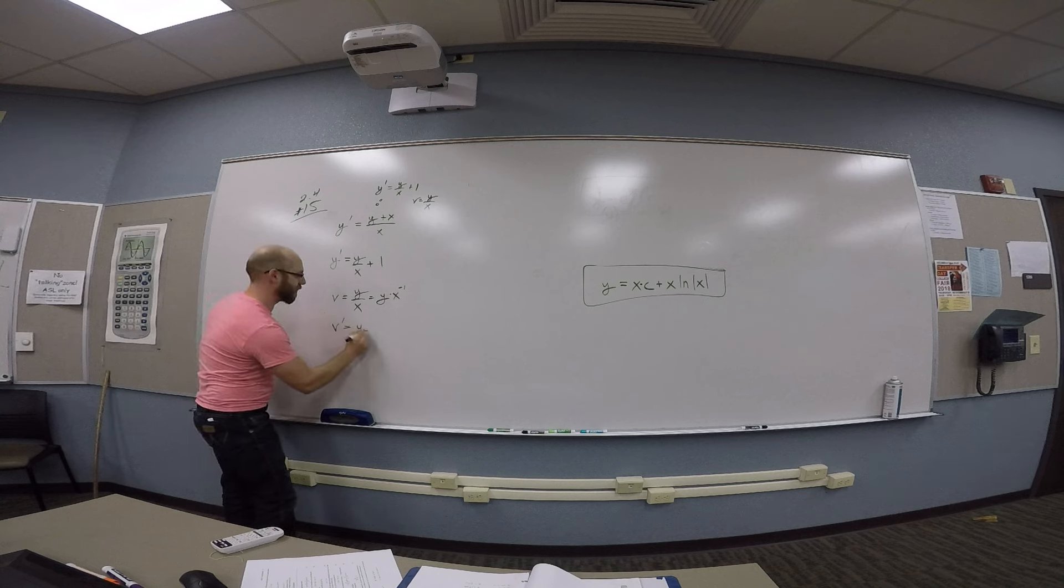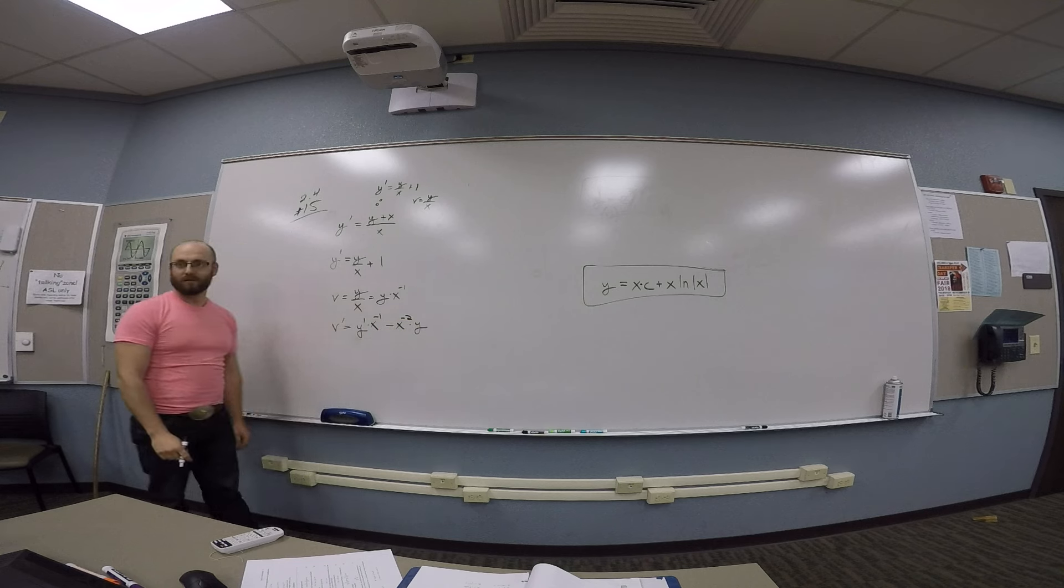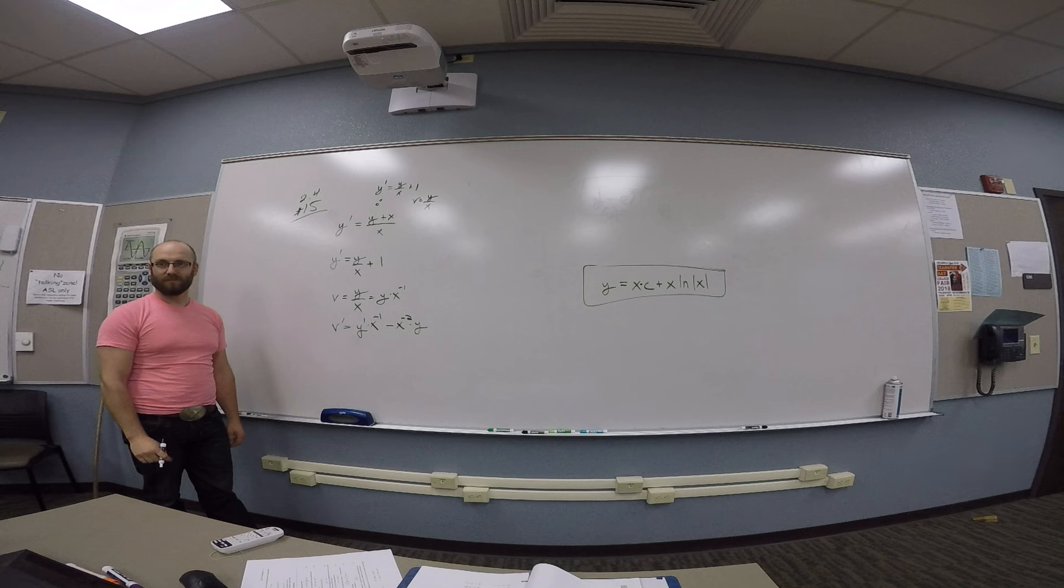y prime times x to the minus 1, minus x to the minus 2 times y. I feel like Leibniz notation would be so much nicer here.